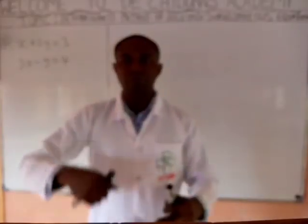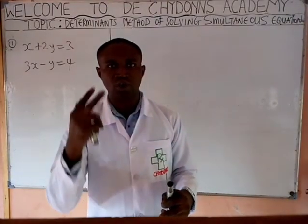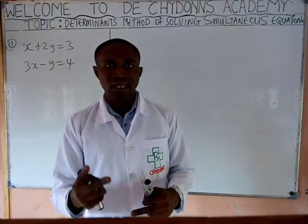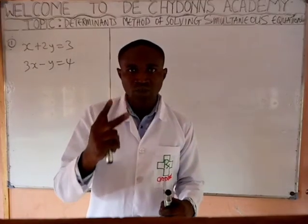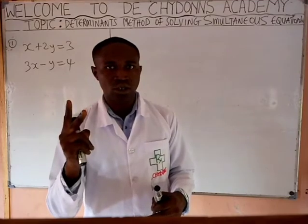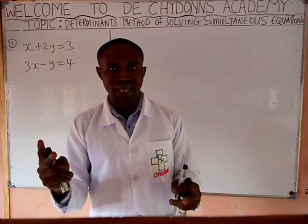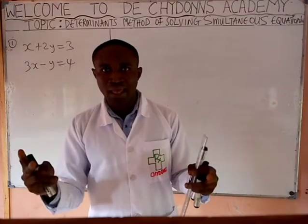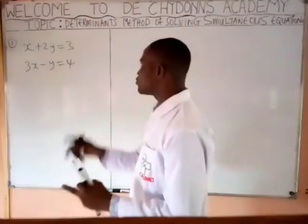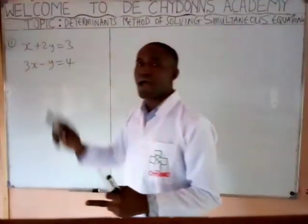How can we solve simultaneous equations in two variables using the determinant method? We call it simultaneous equations in two variables because we have two unknowns. It could be A and B, it could be X and Z, it could be X and Y — it could be any two alphabets. Now let's see the equation on the board. We have two unknowns: X and Y.